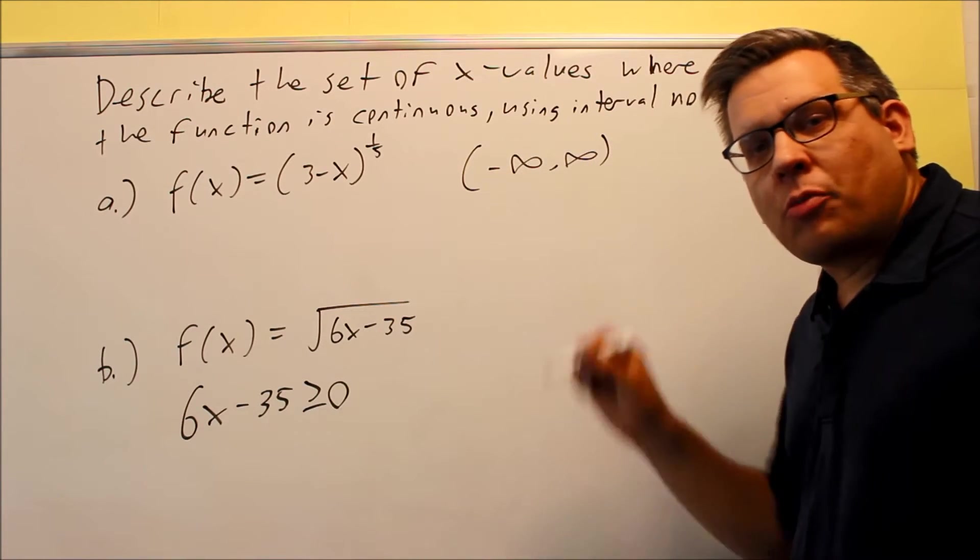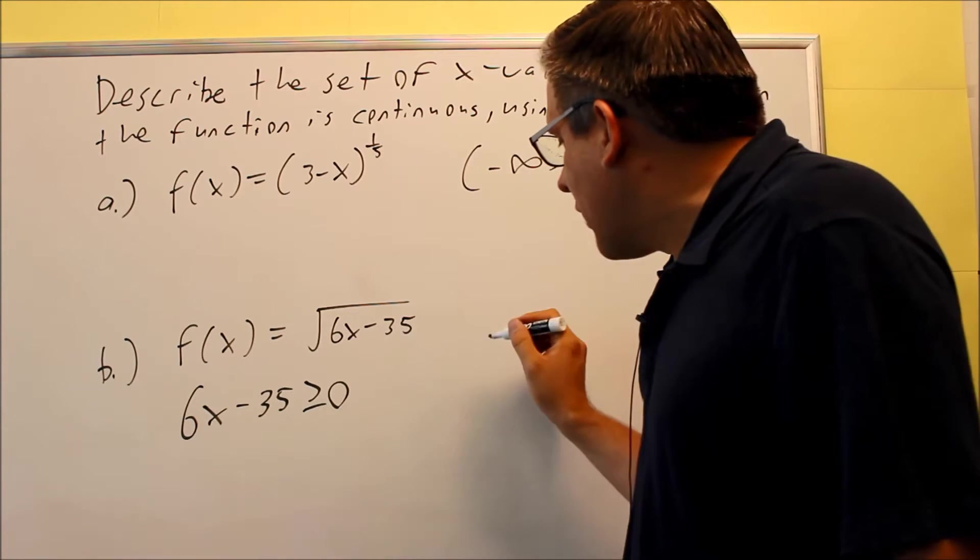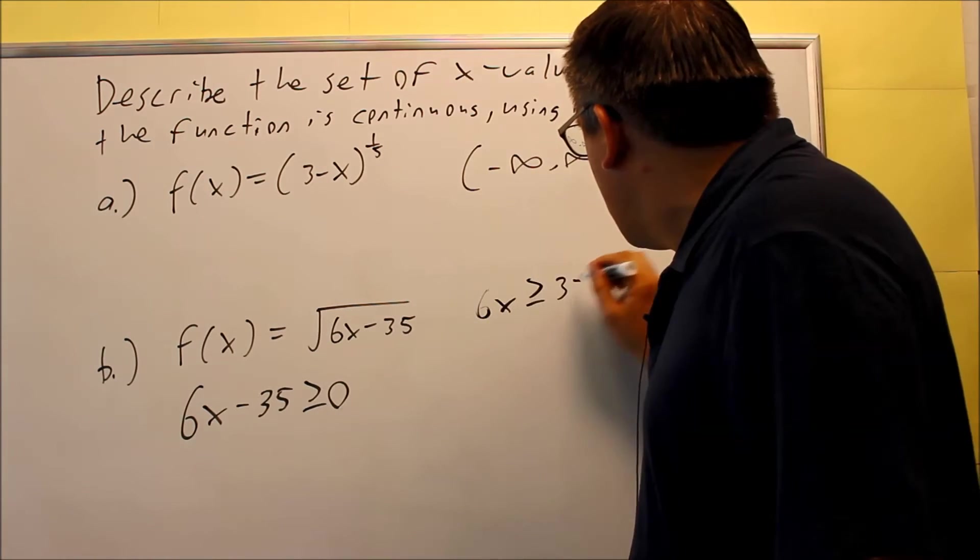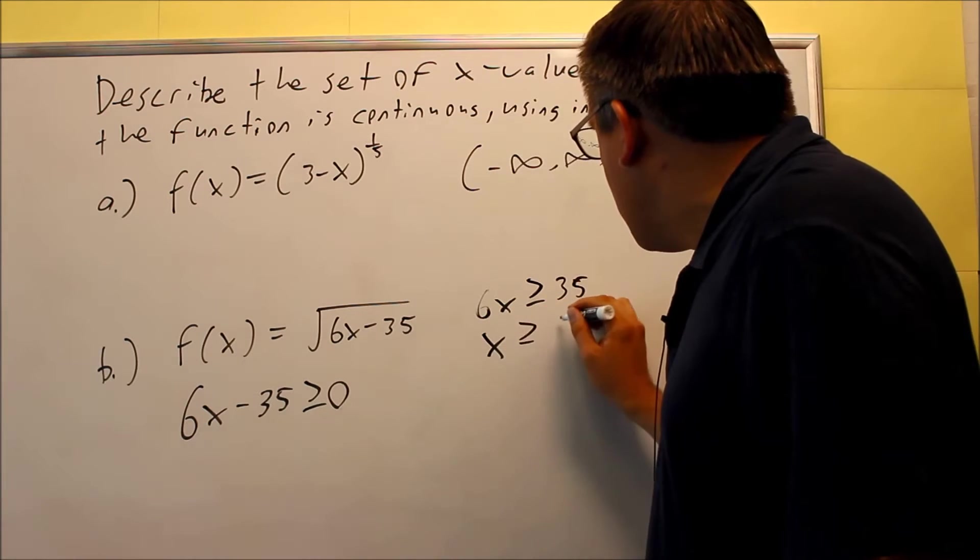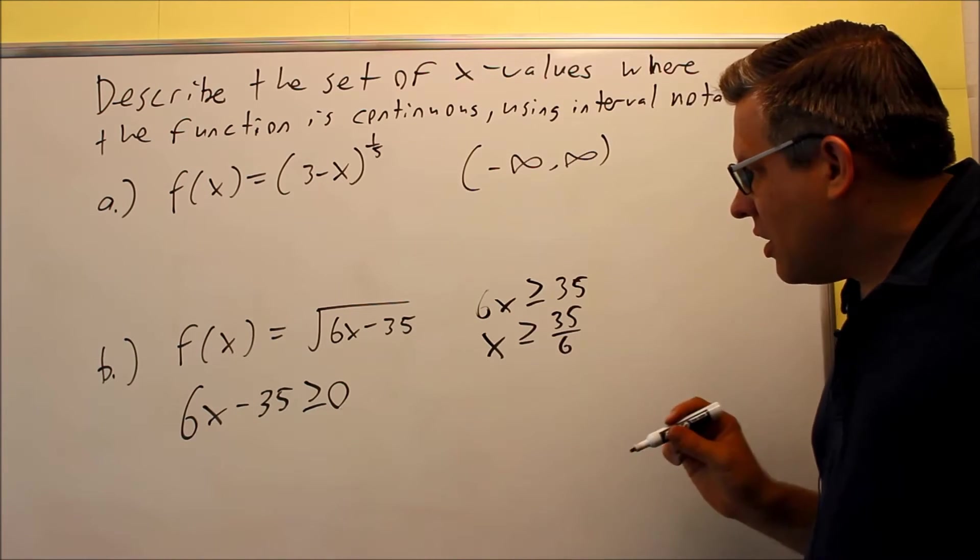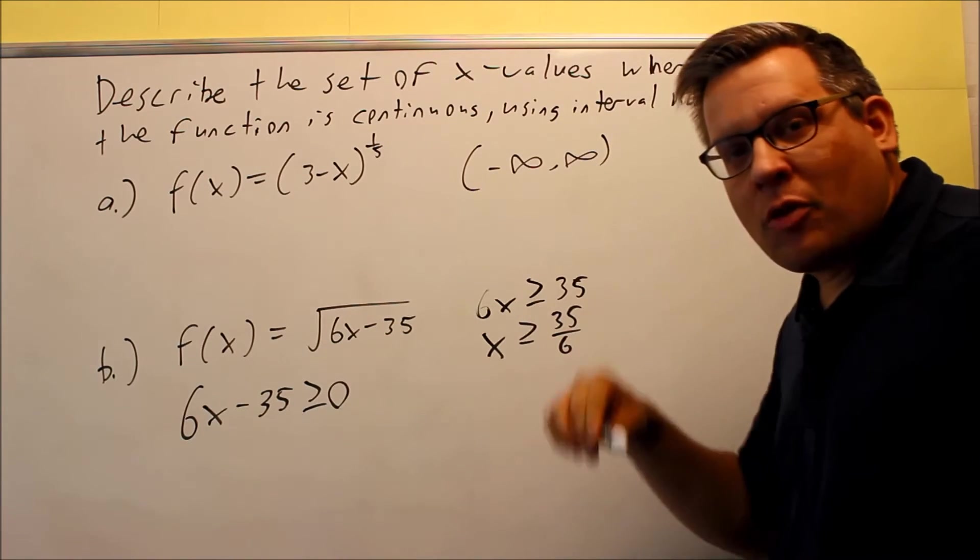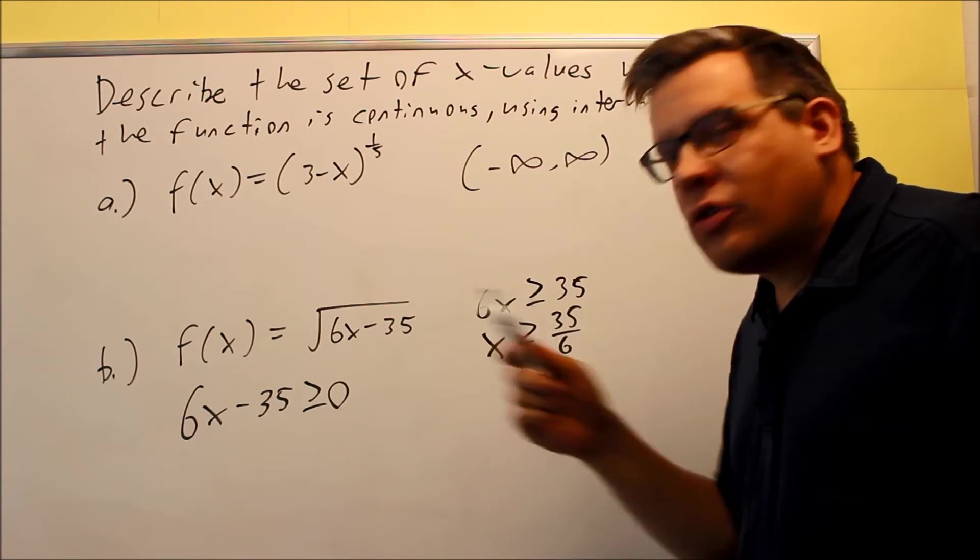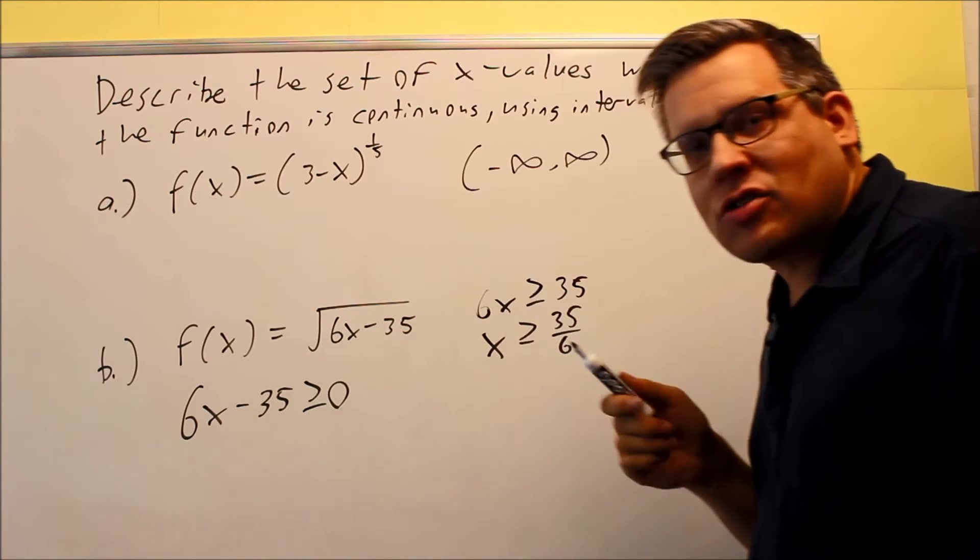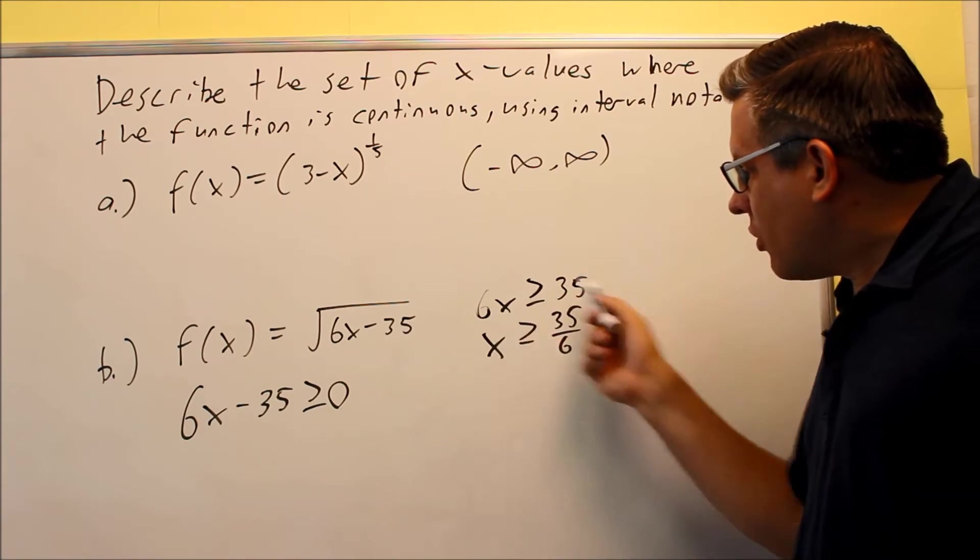Whatever you get from this, you're just going to form your interval notation and that's going to be your answer. So for this, we're going to add 35 to both sides, 6x is going to be greater than or equal to 35, divide by 6 and we get that x has to be greater than or equal to 35 over 6. Now is there ever a chance that you're going to use a greater than only? Yeah, if you have a square root on the bottom of a fraction, in that case you would not want to include the equal sign because in that case you could be dividing by zero. But in this case, because there's no fraction involved, it's okay to include the zero because the square root of zero is zero and we have that.